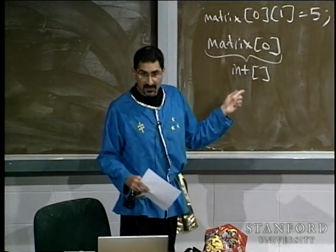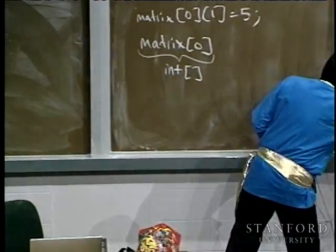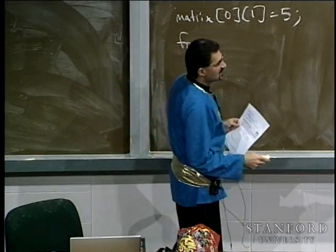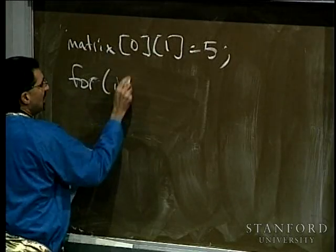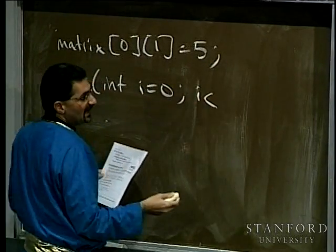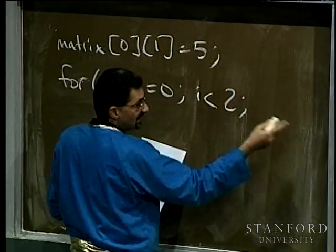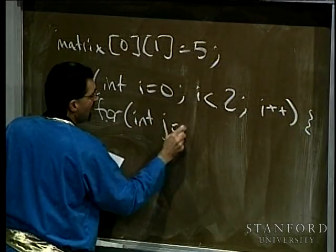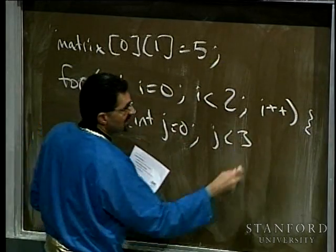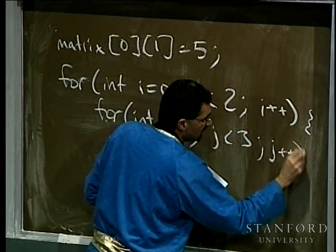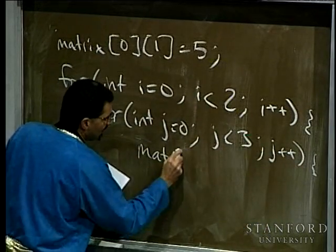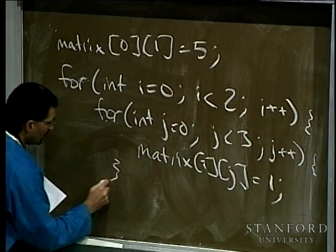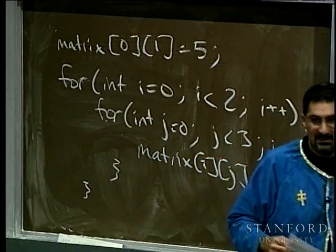We can write a little code to use this. For example, going through all elements of the grid and setting their initial values to 1. We'd have: 'for (int i = 0; i < 2; i++)' and then an inner loop 'for (int j = 0; j < 3; j++)', and inside: 'matrix[i][j] = 1'. That would initialize all the cells in the grid to be 1.